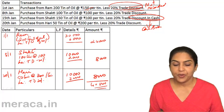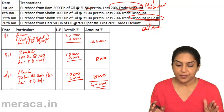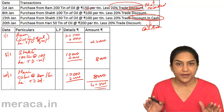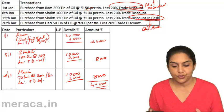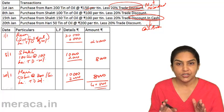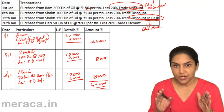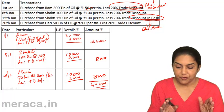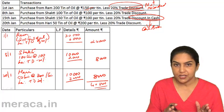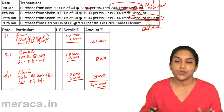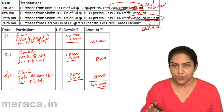How do we post this? Once this is prepared, this is a book of original entry — all credit purchases of goods are first recorded in this book. This is your purchase journal. From this purchase journal, transactions have to be posted into the ledger.